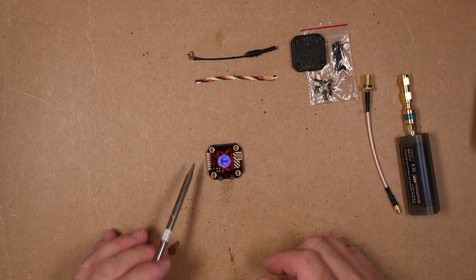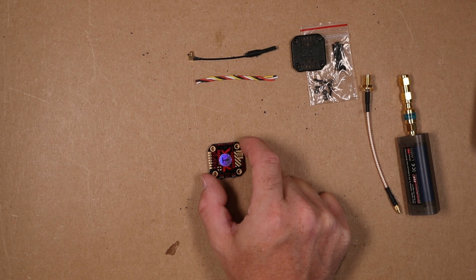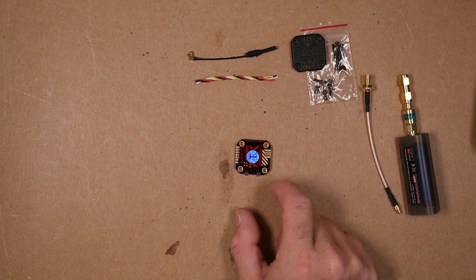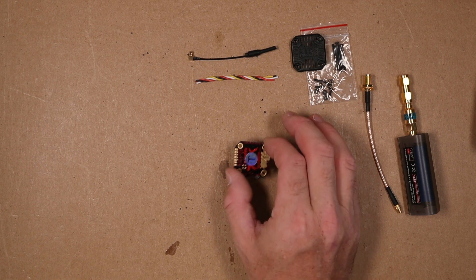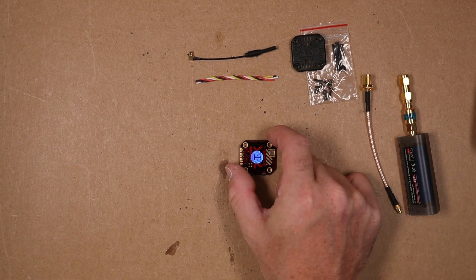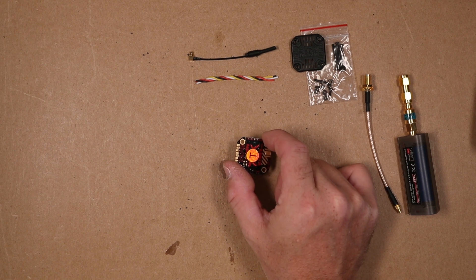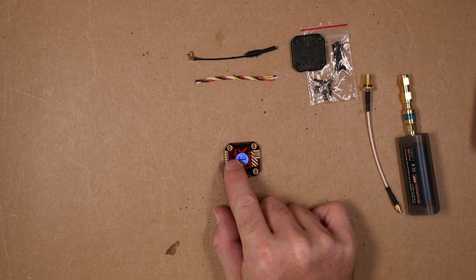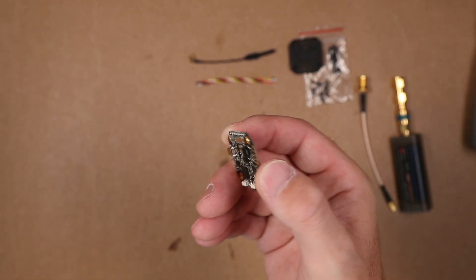This is safe to run on 6s, which is crazy because it's a little 20 by 20. If you're building a super light 5 inch frame with a 20 millimeter stack, this might be your guy. This does have a pit mode, smart audio, and is truly licensed through TBS.